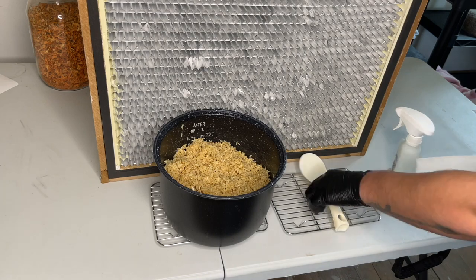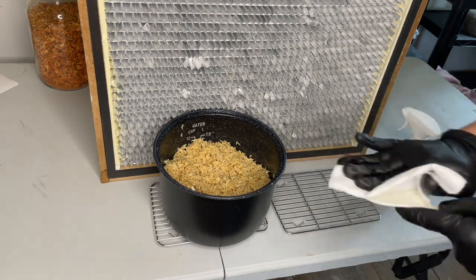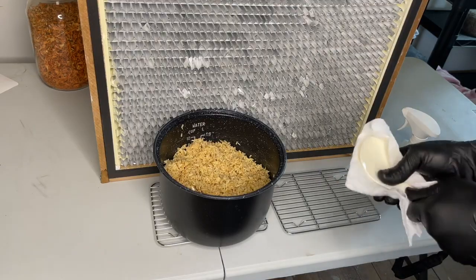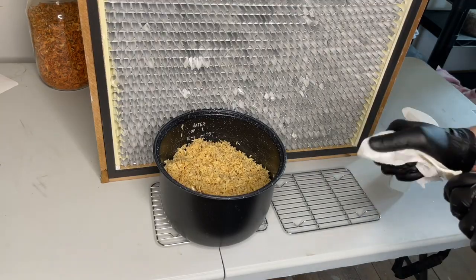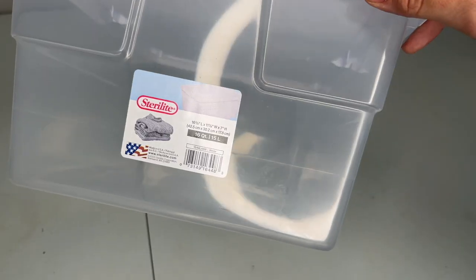Remove the insert from the instant rice cooker and allow it to cool down completely in front of the laminar flow hood. While the rice is cooling down, you can start prepping your 16-quart Sterilite container.